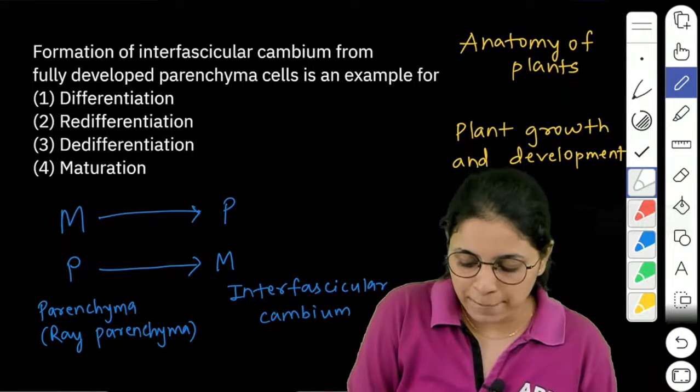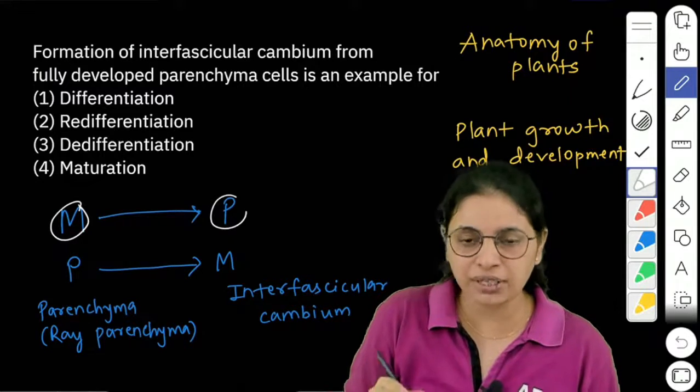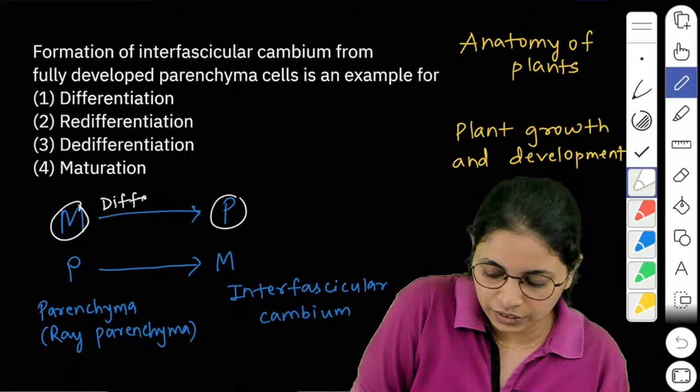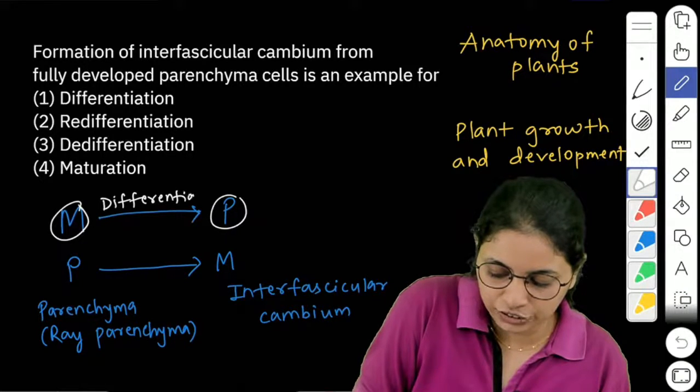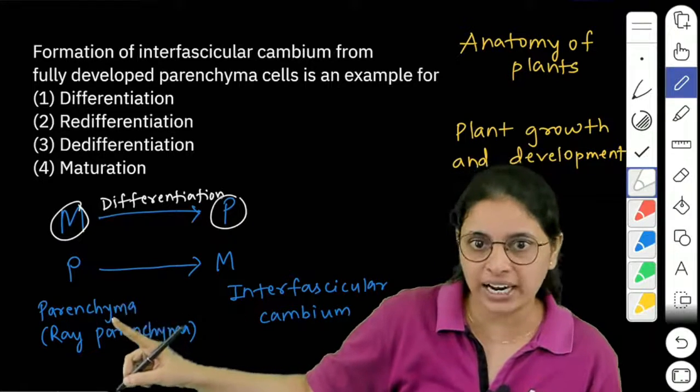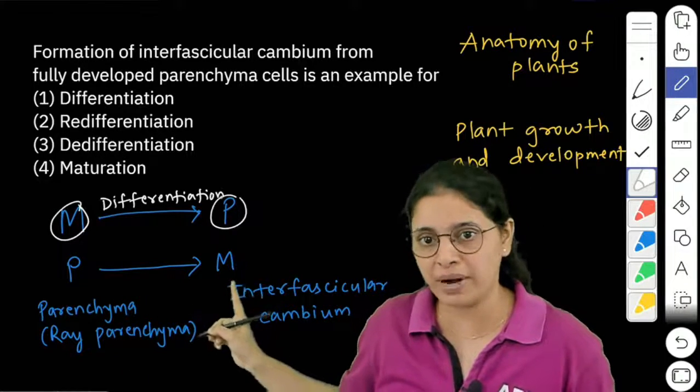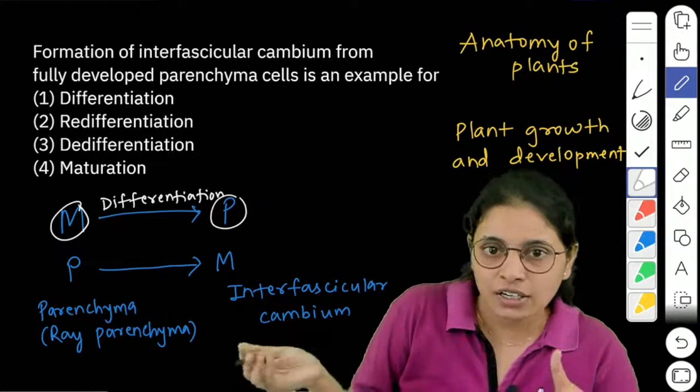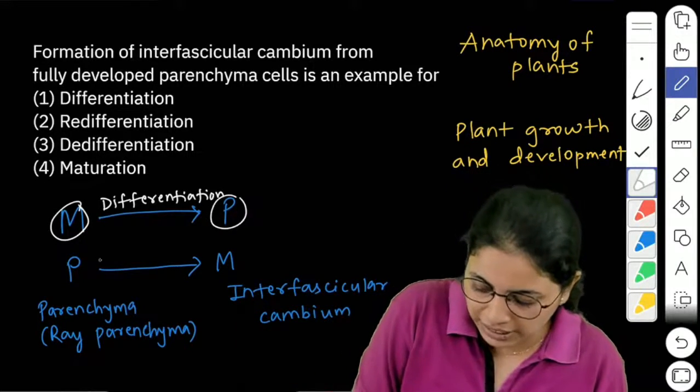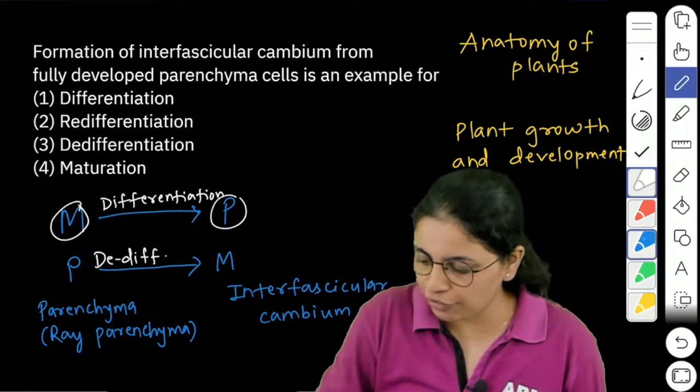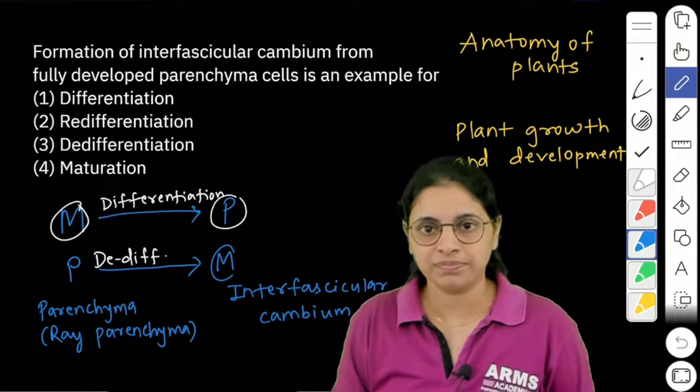Simple hai, meristematic cell permanent mein convert ho gaya sab se pehle in the plant body. Then this is differentiation. What is this? Differentiation. If you have a permanent cell like a parenchyma cell and it becomes meristematic like interfascicular cambium is a meristematic cell, this is the exact ulta process, that means de-differentiation.